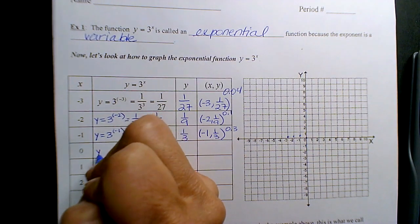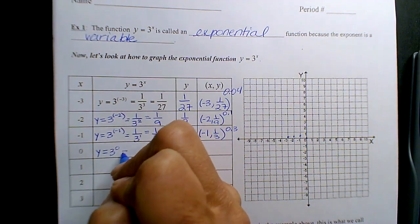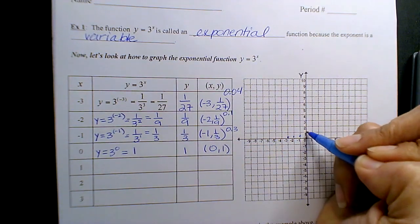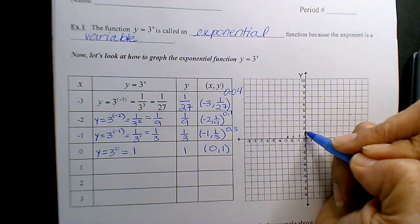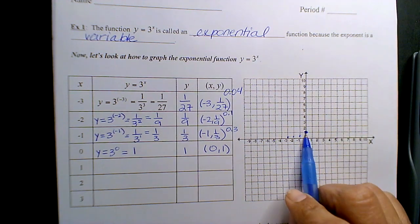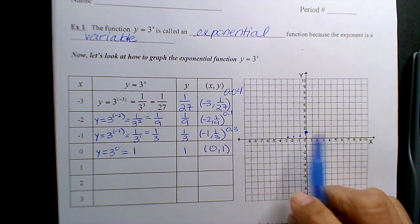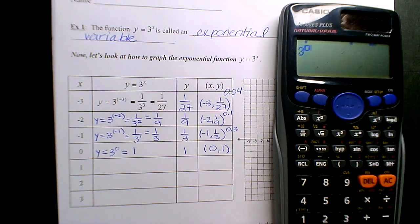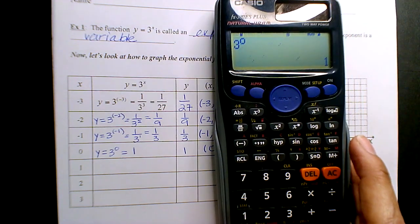Now y equals 3 to the 0 - anything to the 0th power is 1. So this is 0, 1. And so here's your y-intercept there, 0, 1. You can plug that in - 3 to the 0, and your calculator will give you the 1.